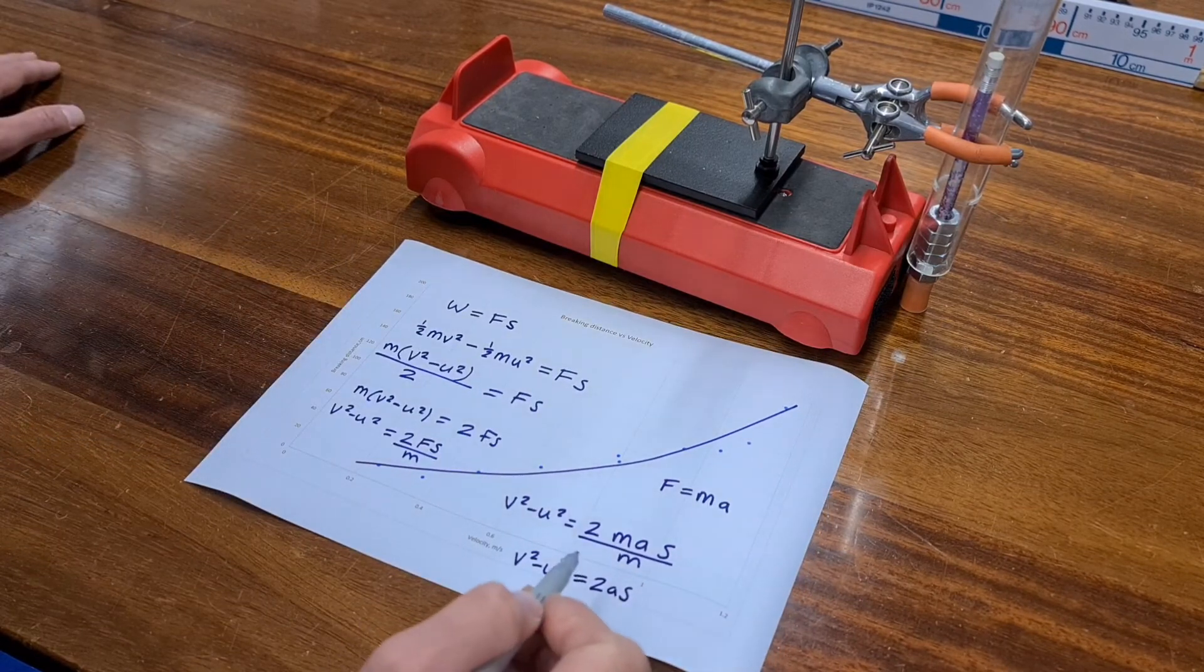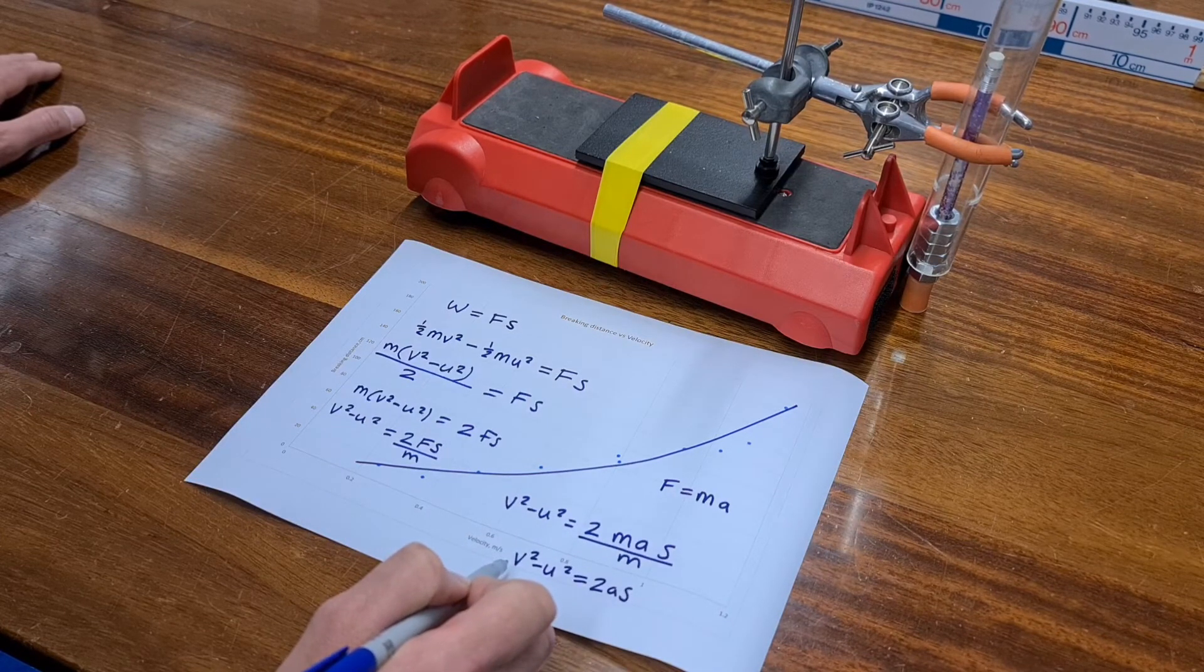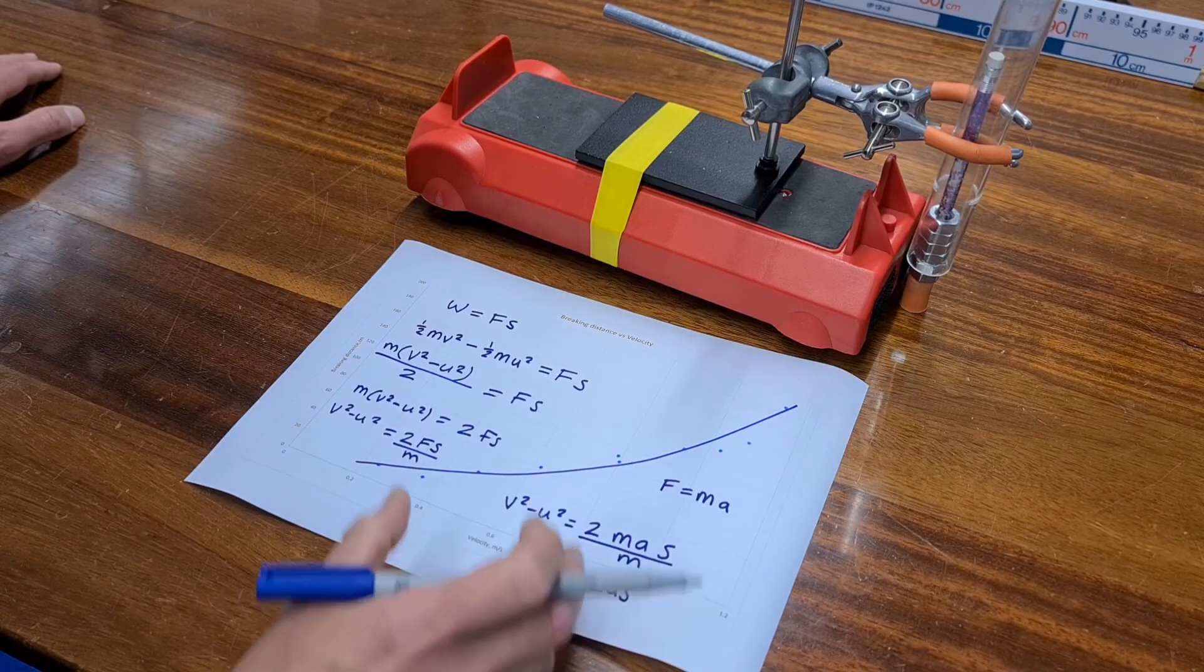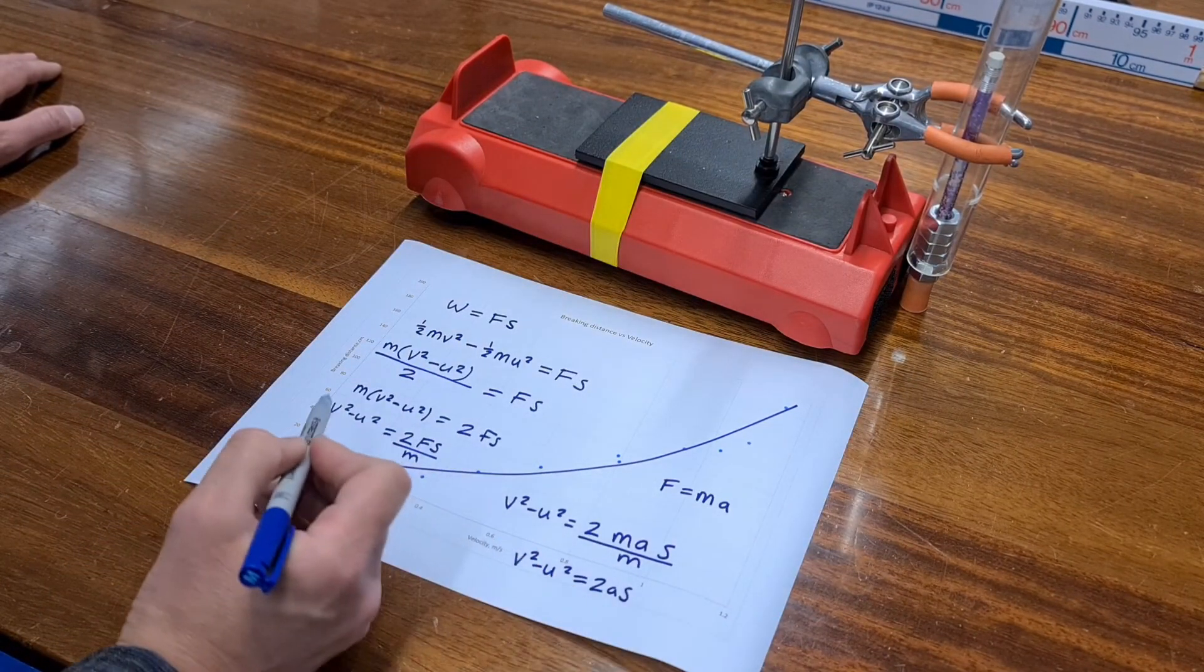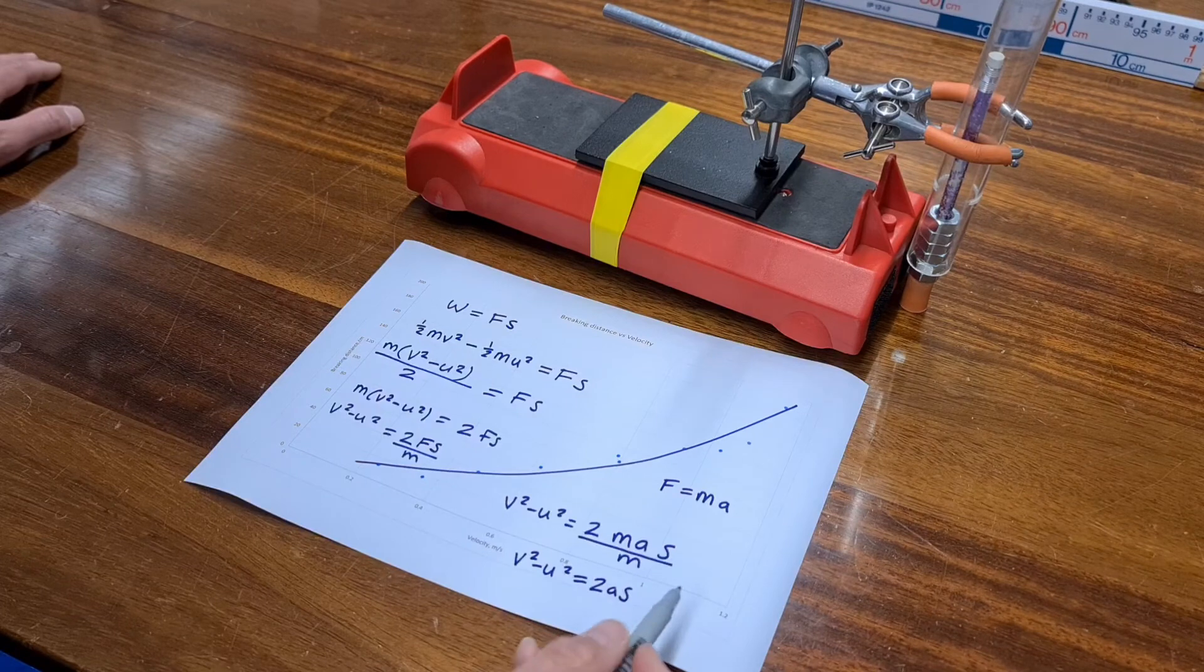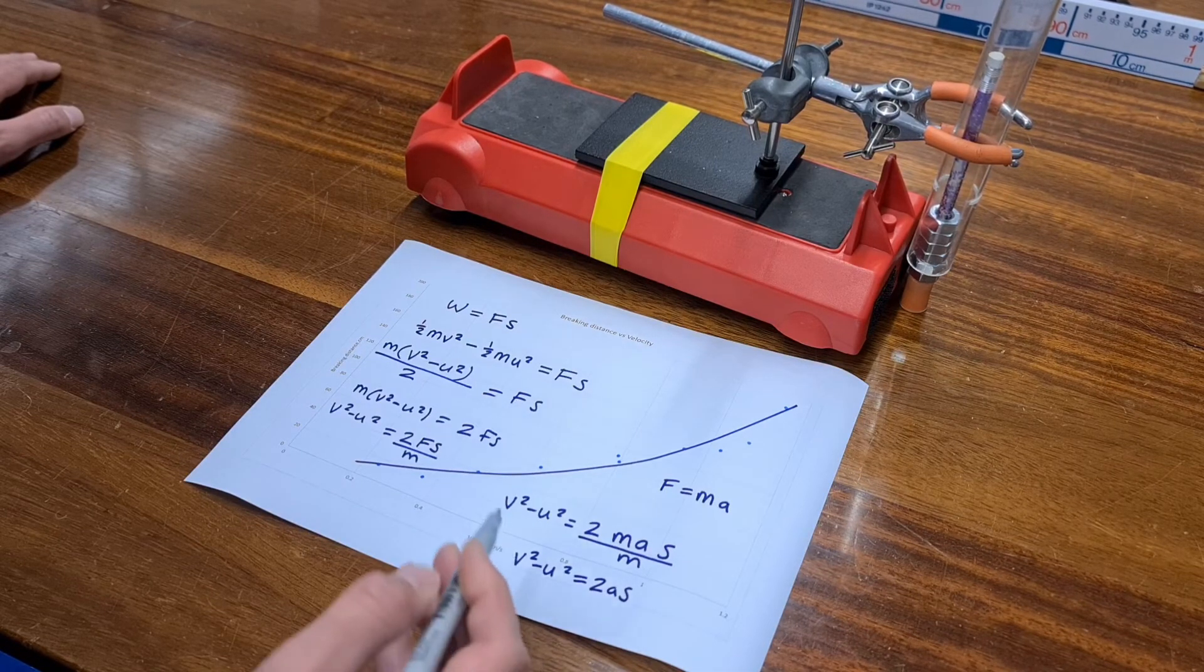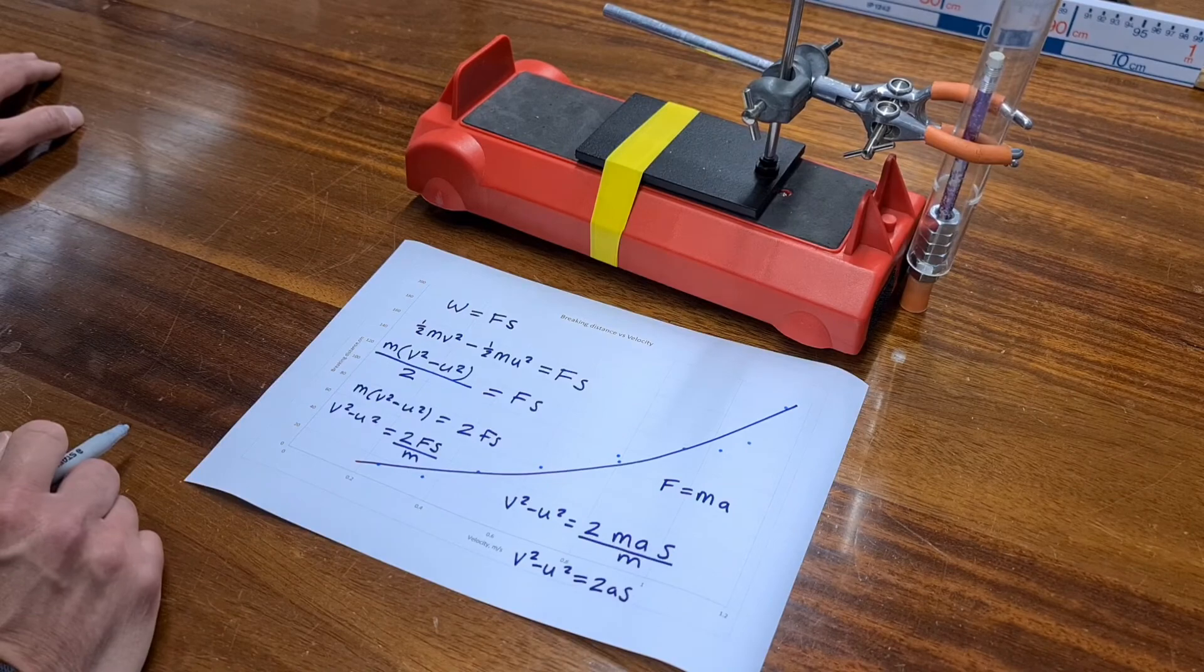This is the formula that helps us calculate how quickly something will be falling when it has fallen through a certain height in Earth's gravity. And what you can see is that this formula is also being a part of this situation. The reason why it appears in this graph that the braking distance is proportional to the velocity squared is because in this formula you can see that the braking distance s is indeed proportional to the velocity squared. So this graph is a brilliant proof of that formula that you need to know for GCSE.